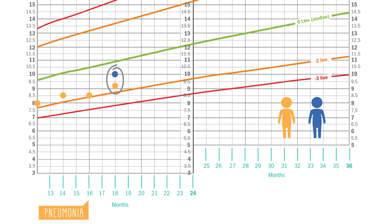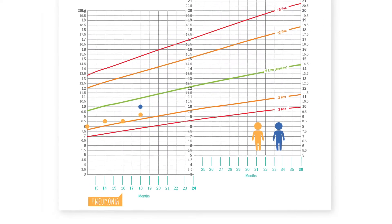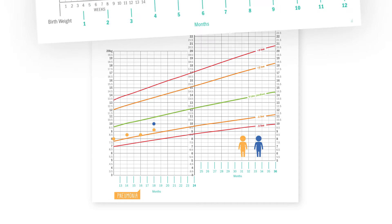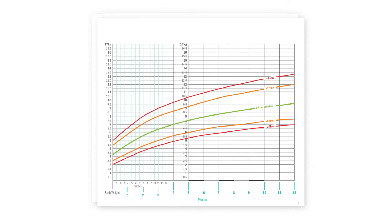you might think that the blue child is healthier or growing better than the orange child at 18 months. But what if we were to go back and look at the growth charts of these two children in their first year of life?